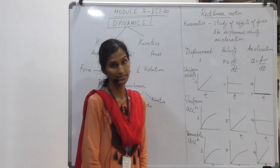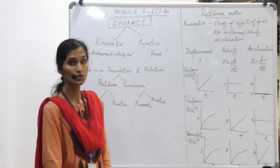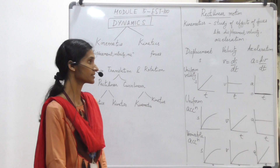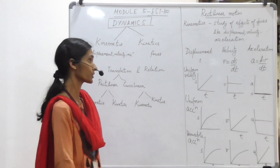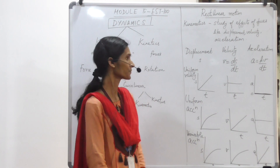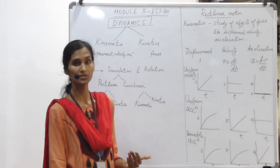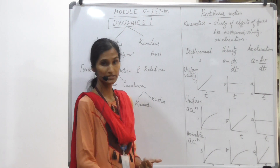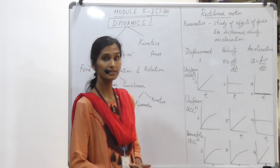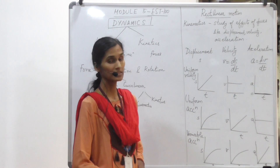Displacement, velocity, and acceleration are terms you are already familiar with — they are the effects caused by a force acting on a body. Displacement is denoted by S, velocity by V, and acceleration by A, and all are related by rate of change. In the uniform velocity case — when a body undergoes equal displacements in equal intervals of time — the graph of S versus T is a straight line, velocity is constant, and there is no acceleration.